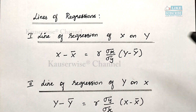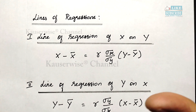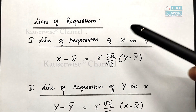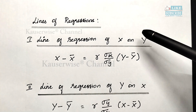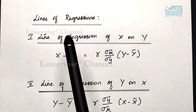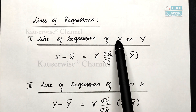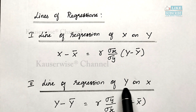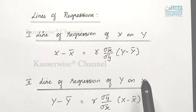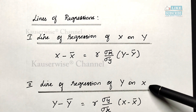Now let us see the formula for lines of regression. The meaning of a line of regression is a line which gives the best estimate of one variable — that is x — for any given value of the other variable — that is y. We have two different equations: the first is the line of regression of x on y, where we find x based on y; and the second is the line of regression of y on x, where we find y based on x.